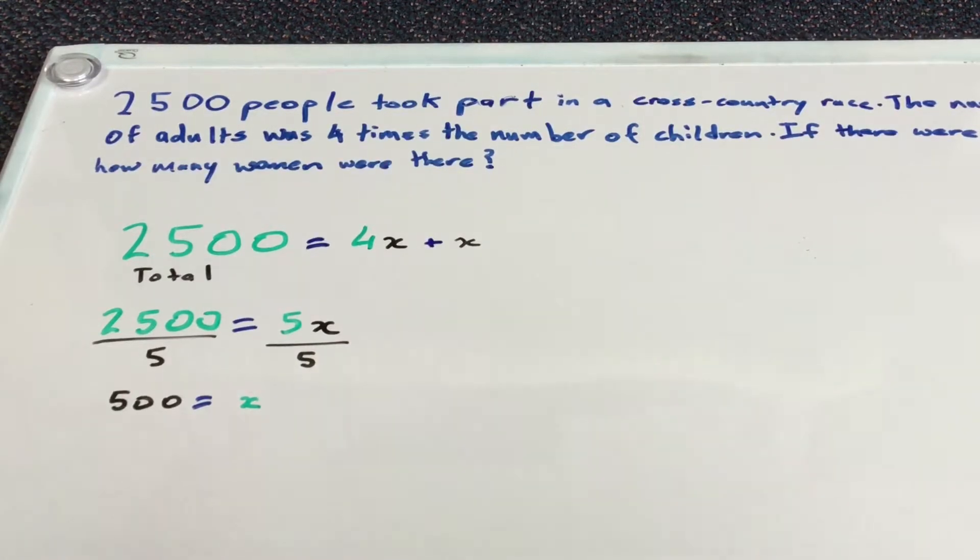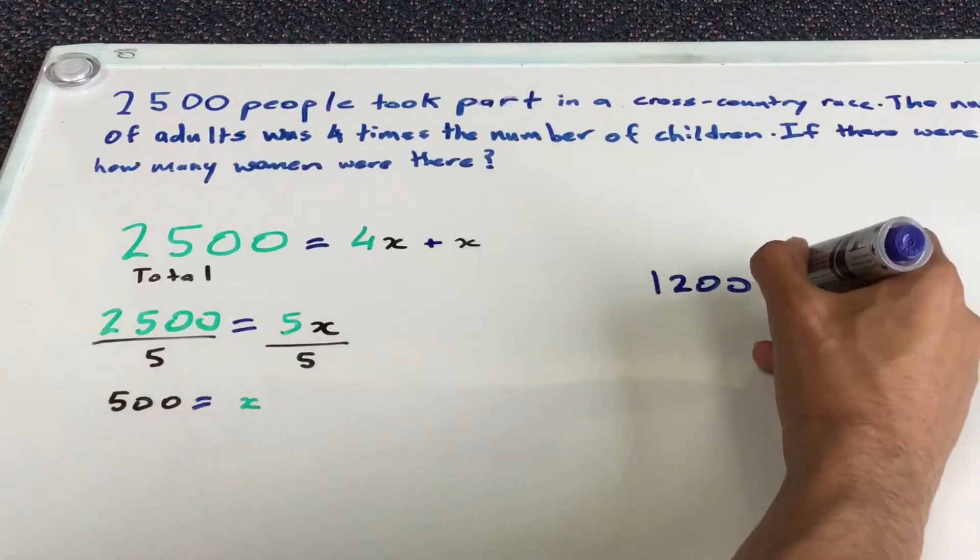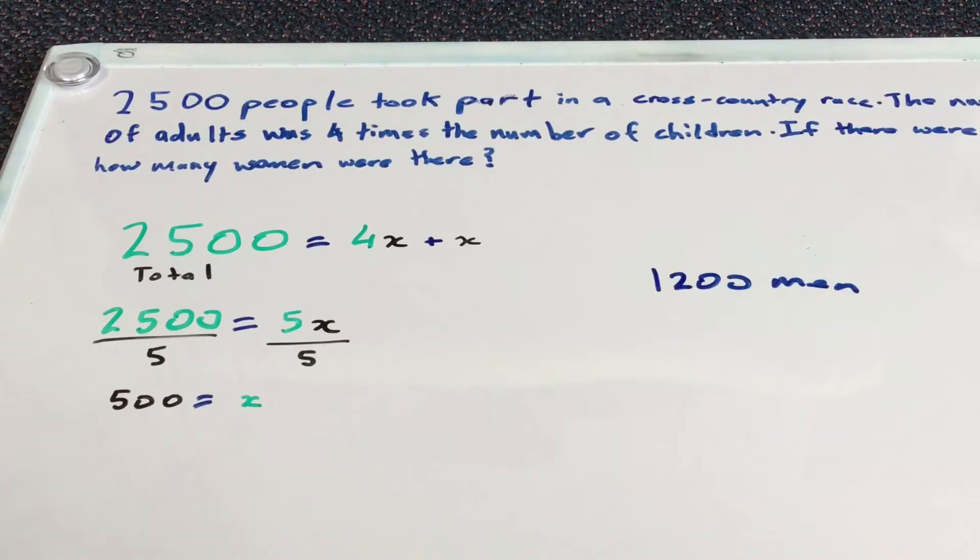So now what do we do? Now we know that our question tells us that there are 1,200 men, right? So we can write this down over here, 1,200 men. So now what we need to find is the number of adults, first of all.